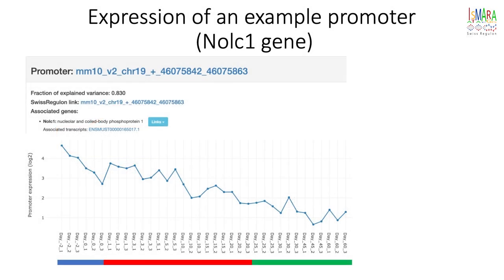Let's illustrate how this works for an example gene. This ISMARA interface provides plots of all expression profiles of all promoters and this plot shows the expression profile of the promoter of the gene Nolc1. As we can see, the expression of this gene is going down as development progresses.